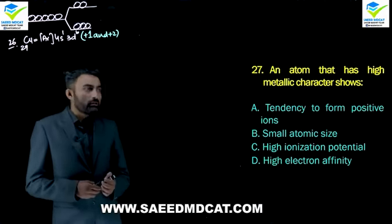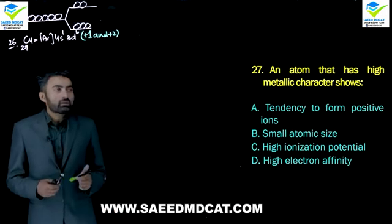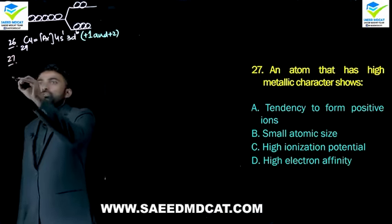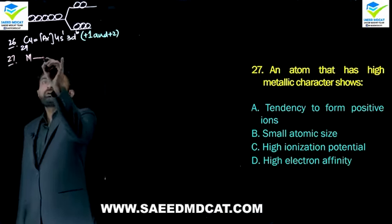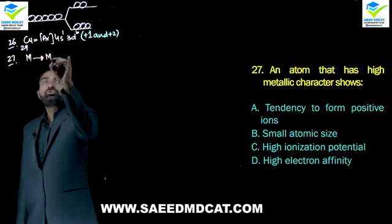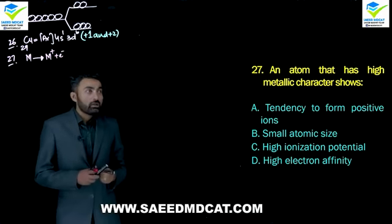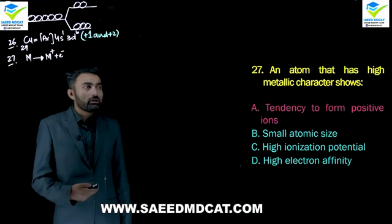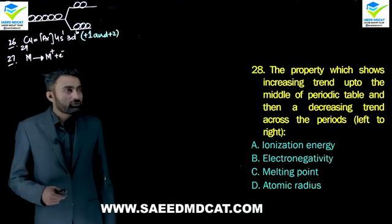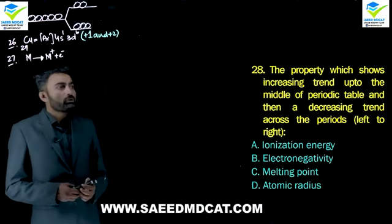Question 27: An atom that has high metallic character shows what property? By definition, metallic character means the tendency to lose electrons and form positive ions. So alpha option: an atom with high metallic character easily forms positive ions.